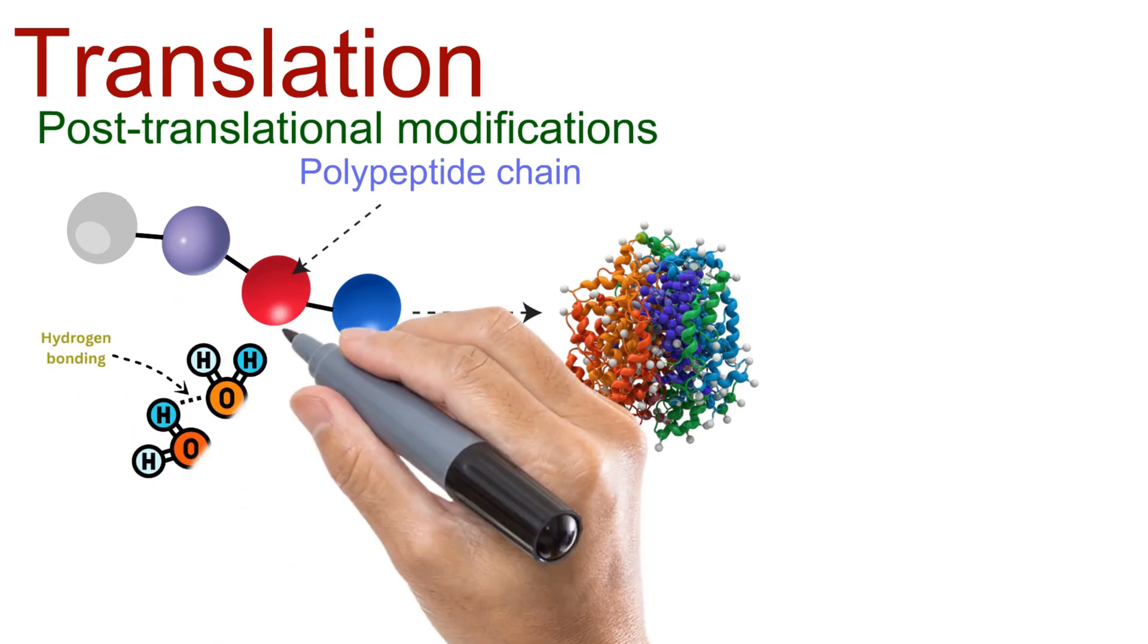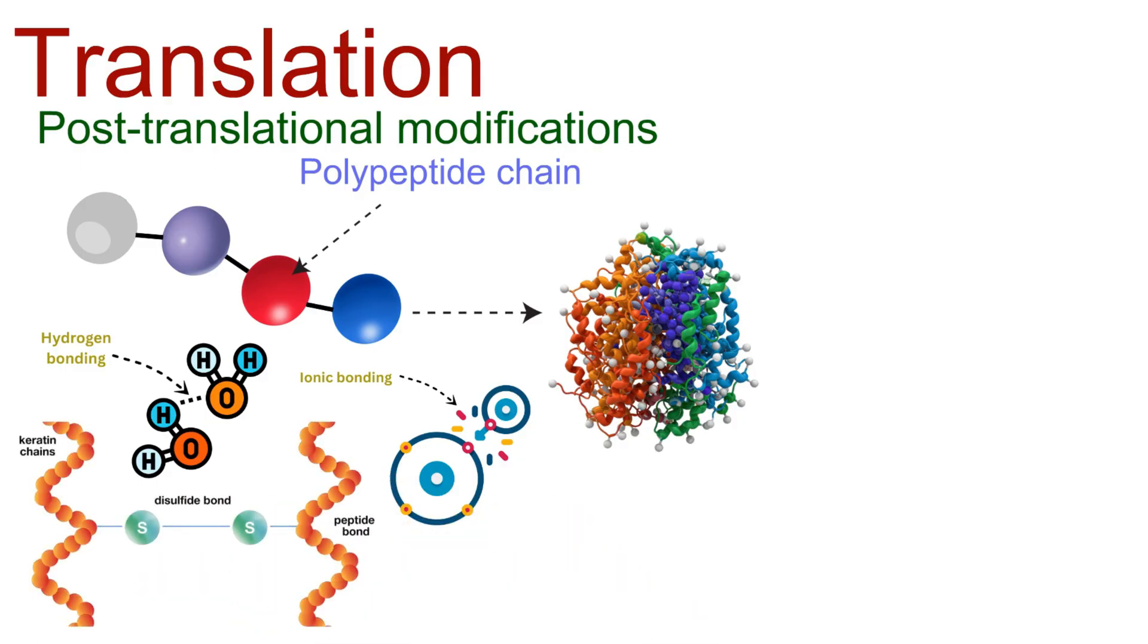such as hydrogen bonds, ionic bonds, and disulfide bridges. It's this precise folding that gives every protein its unique shape and, ultimately, its unique function.